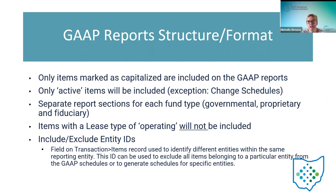Separate report sections: when you're running these GAAP reports, you'll see sections for fixed asset by source broken down by governmental, proprietary, fiduciary, and possibly a section for unknown fund types. We'll talk about those unknowns and other invalid messages you're seeing on some of these GAAP reports when we get to each one of them.